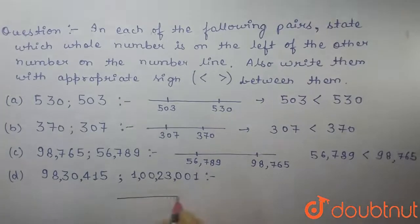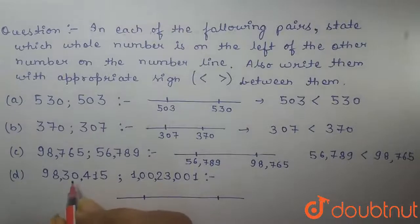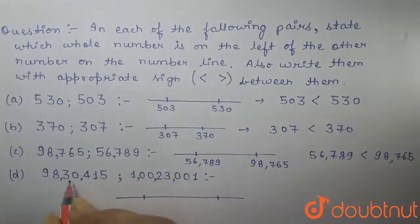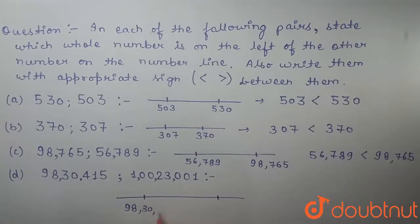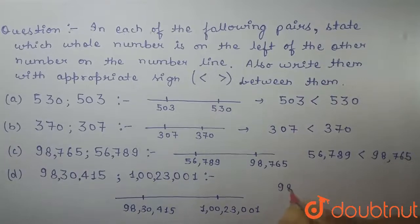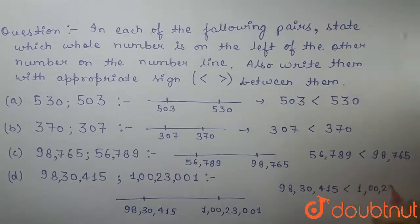In this, if we plot it on a number line, this is 98,30,415 and this is 1,23,001. So, this number is greater and this number is smaller. So, this comes on the left side of the number line and this can be plotted in this way. So, 98,30,415 is less than 1,23,001.